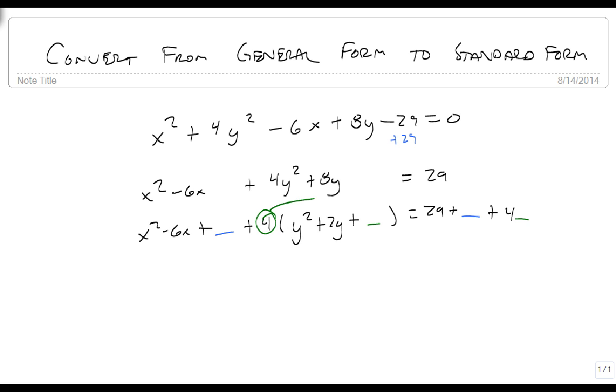This 4 right here that we factored out is being multiplied to that, so it also has to be multiplied to that. That's a real key. Whatever, if I factor something off of one of my variables, whatever I pulled off has to end up over here.